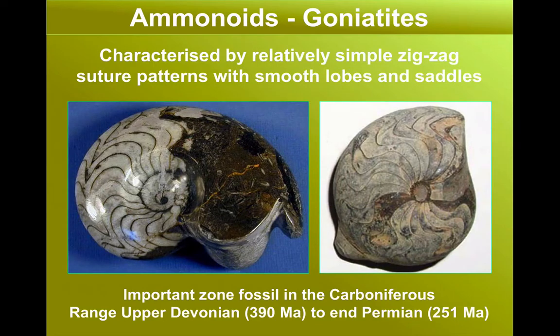The earliest of these ammonoids that we study are the goniatites, and these have a very simple suture line. The images shown here show quite an almost sinuous pattern of sutures. These are really important zone fossils in the Carboniferous period. They appeared in the Upper Devonian and became extinct at the end of the Permian.